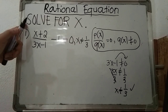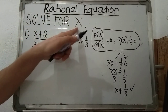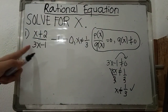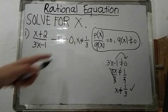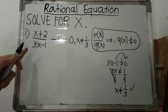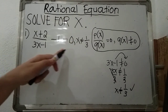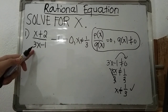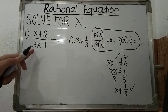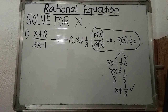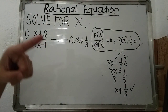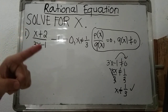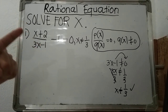Our main objective is to solve for x. Based on this rational equation, in solving for x there are actually three ways. The first way is by using cross multiplication.